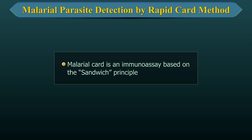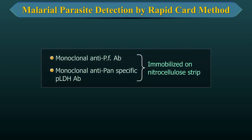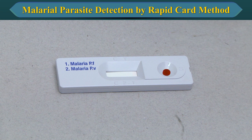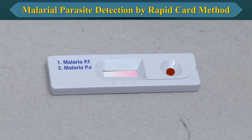The malarial card is an immunoassay based on the sandwich principle. The test uses monoclonal anti-Plasmodium falciparum antibody and monoclonal anti-panspecific Plasmodium LDH antibodies immobilized on a nitrocellulose strip. The test sample is added and on addition of assay buffer, the red blood cells get lysed. This complex migrates through the nitrocellulose strip by capillary action.